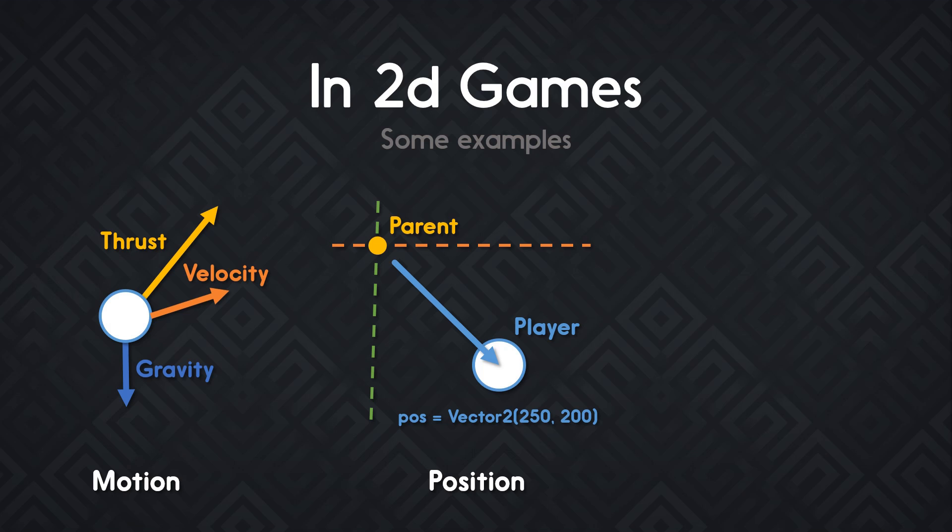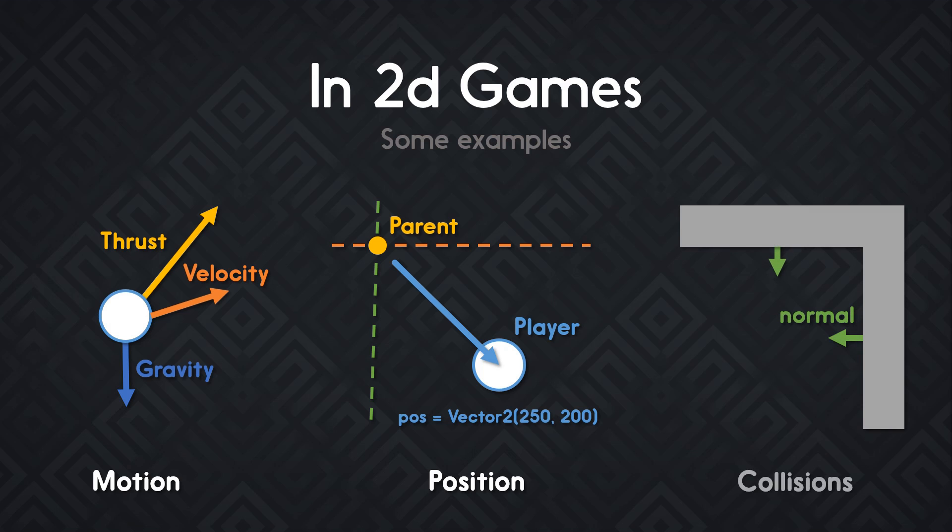You can also see a position as a distance in a certain direction from an object's parent or the origin of the world. On top of that, we also use them for normals. They are vectors with a length of 1 that are perpendicular to a surface and points away from it. You can use normals to know the degree of the slope you're walking on. You can use it to know if there's a wall to your right or to your left.